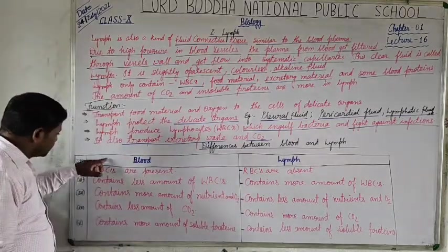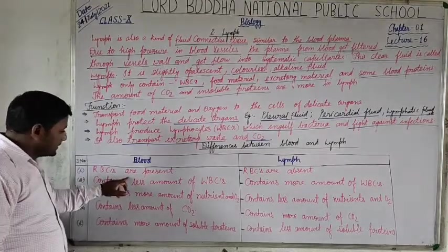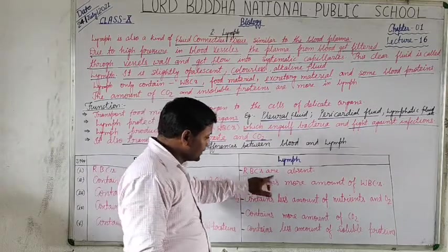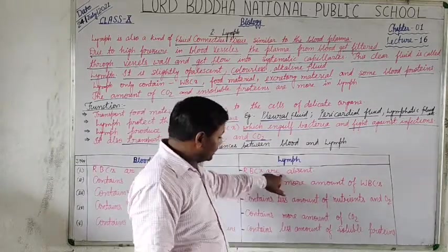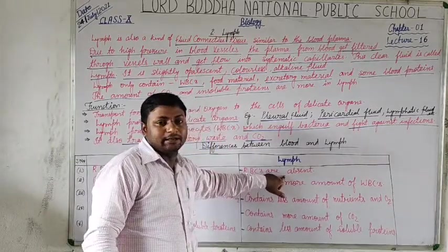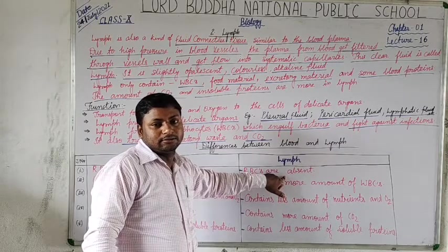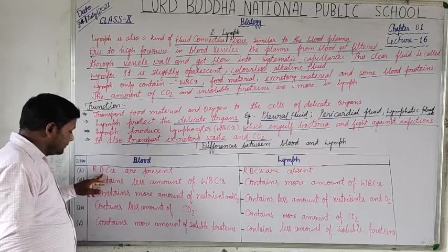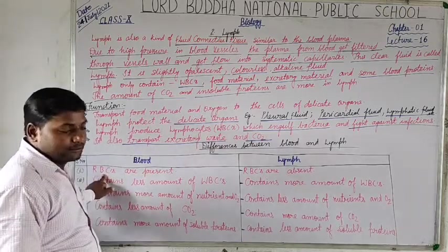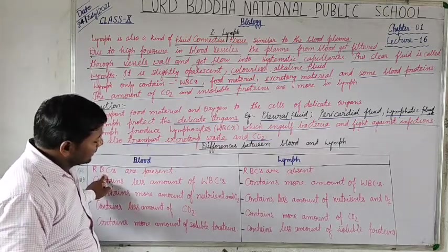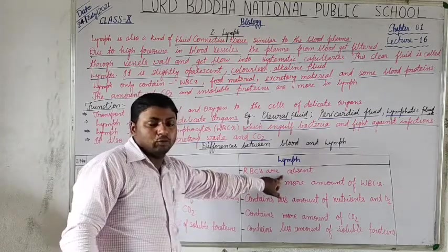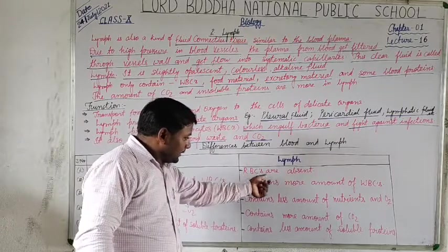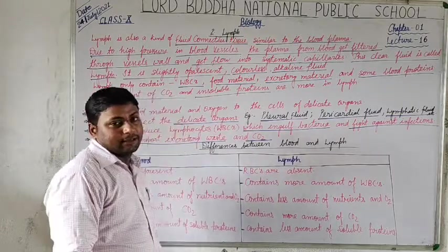Students, RBCs are present in blood but in lymph, RBCs are absent. That is why lymph appears colorless. Because RBCs contain hemoglobin, in the absence of RBCs no hemoglobin is present in lymph — that is why it appears colorless.